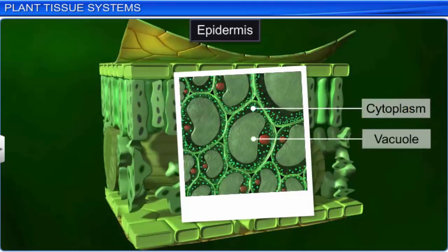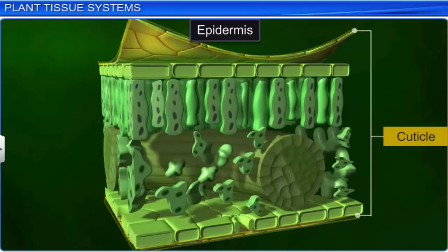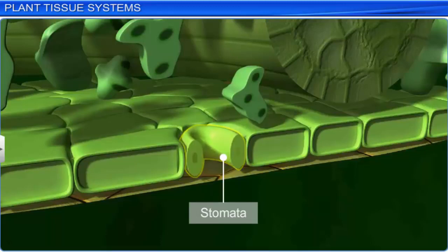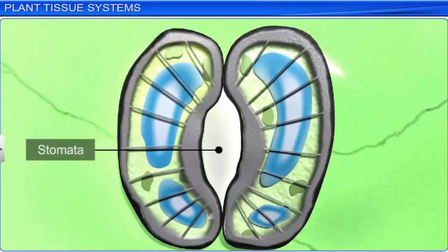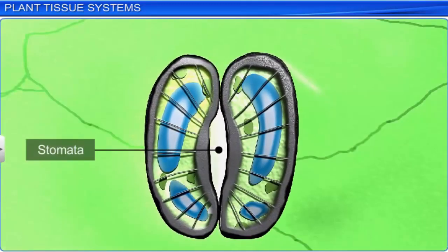The outer layer of the epidermis is coated with a thick and waxy layer called the cuticle, which prevents the loss of water. Stomata are present in the epidermis of the leaves. They regulate the process of transpiration and gaseous exchange. Each stoma consists of two bean-shaped cells called guard cells. Guard cells contain chloroplasts and regulate the opening and closing of a stoma.